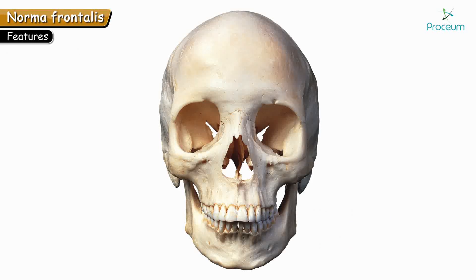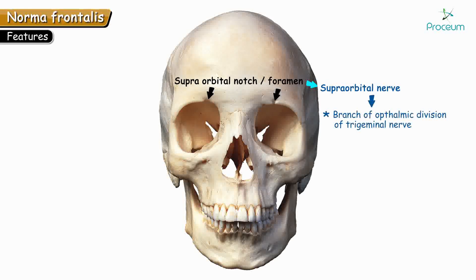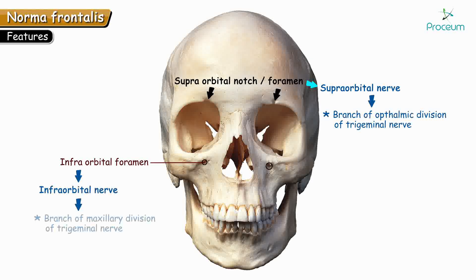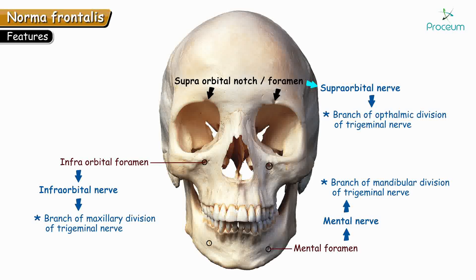To summarize the foramina of Norma frontalis: the supra-orbital notch transmits the supra-orbital nerve, which is a branch of the ophthalmic division of the trigeminal nerve. The infraorbital foramen transmits the infraorbital nerve, a branch of the maxillary division of the trigeminal nerve. The mental foramen transmits the mental nerve, a terminal branch of the mandibular division of the trigeminal nerve. Together, these are indirectly branches of the trigeminal nerve, providing most of the sensory supply to the face. This concludes the topic of Norma frontalis.